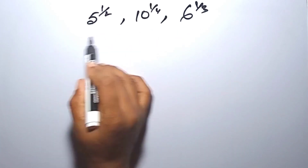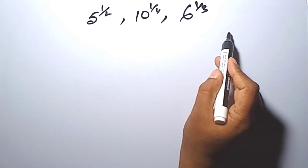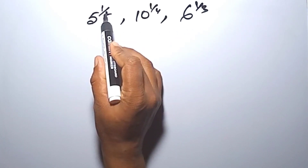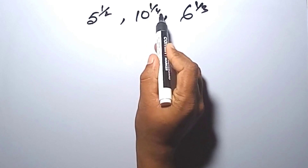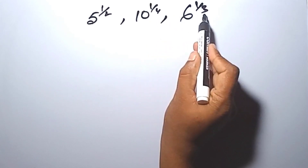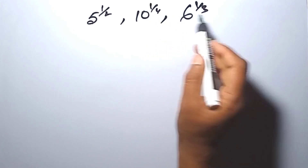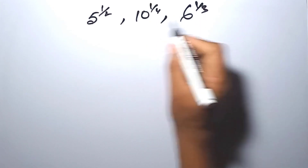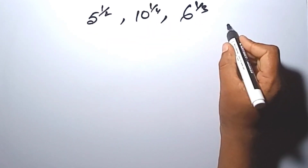How to arrange this in ascending order. First there is 2, there is 4 and 3. So first find the LCM of between of this.